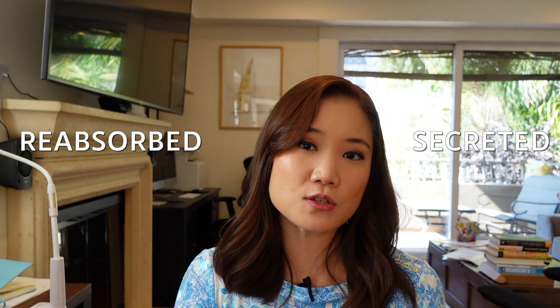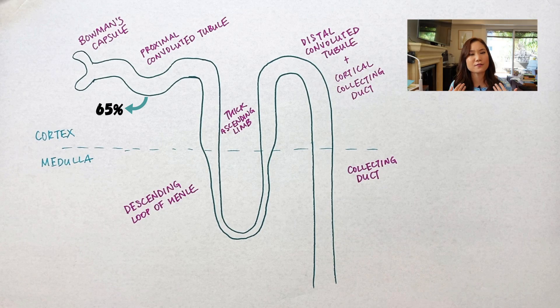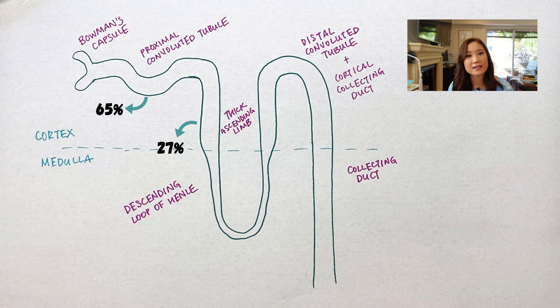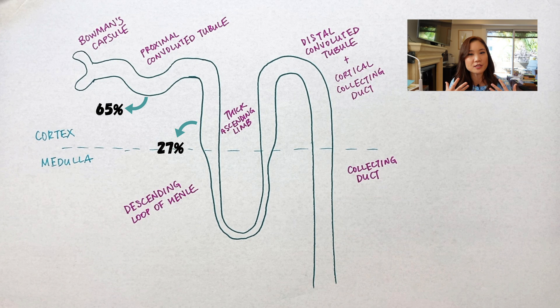As blood travels through the glomerulus, proteins, ions, and fluid are filtered out into the tubular lumen of the nephron. As this tubular fluid travels through the nephron, things are either being reabsorbed — brought back into the body — or secreted into the tubular fluid, which eventually leaves your body as urine. For potassium, 65% of what makes it into the tubular fluid is reabsorbed in the proximal convoluted tubule, and 27% is reabsorbed in the thick ascending limb. In the distal convoluted tubule, the predominant process shifts — it's not reabsorption but rather secretion of potassium. And finally, in the collecting duct, only about 4% of the potassium is reabsorbed.